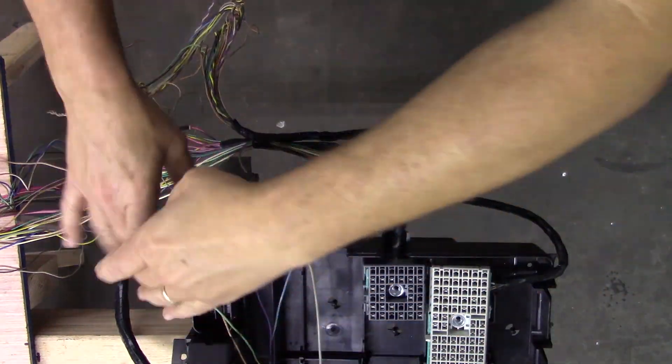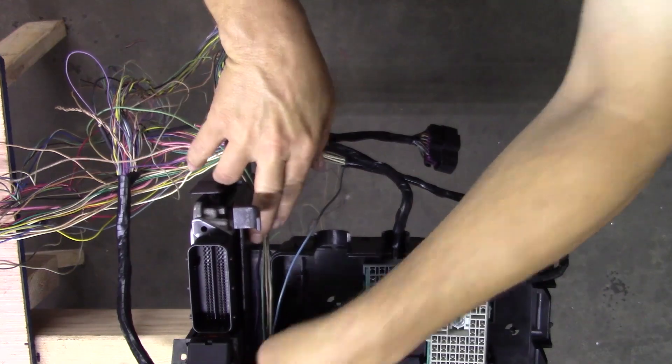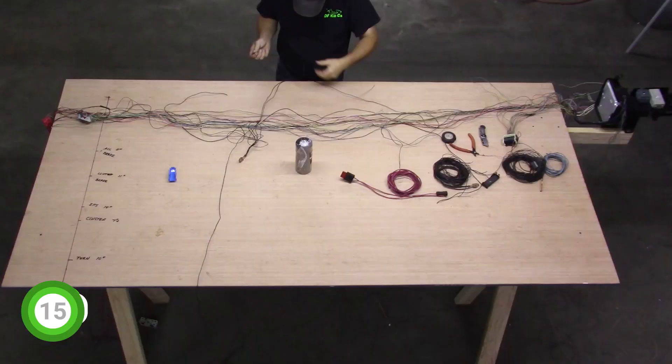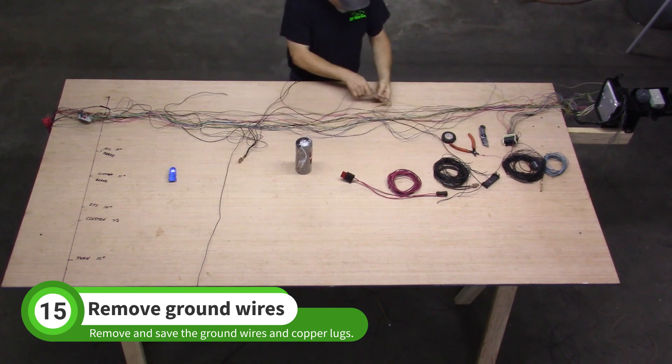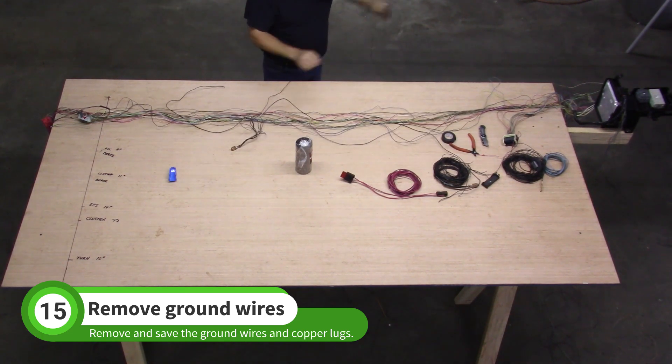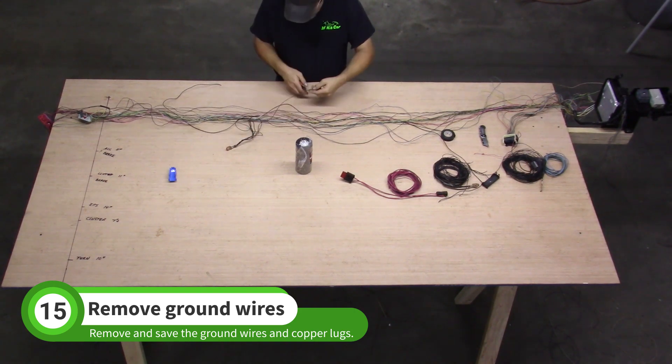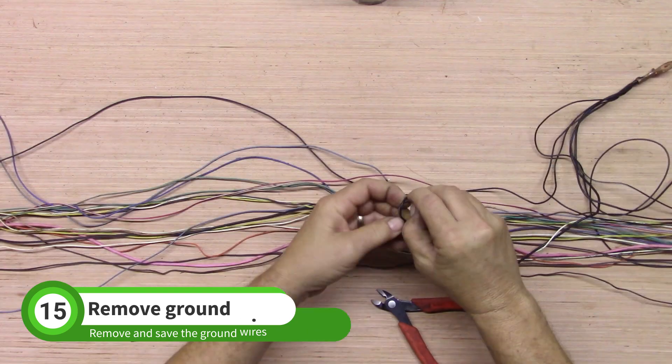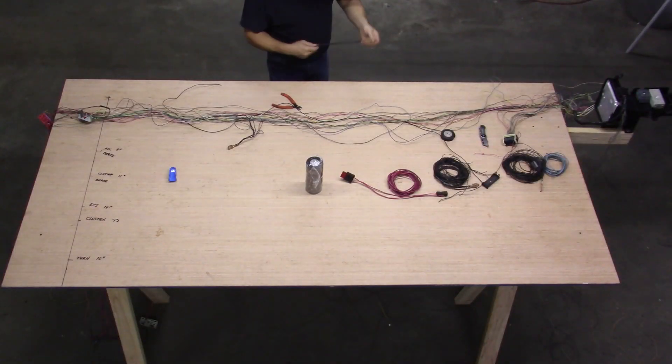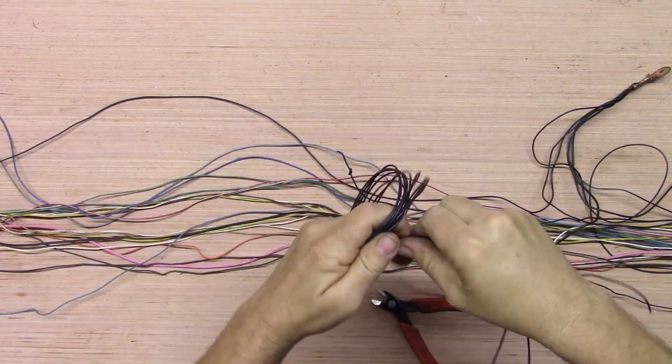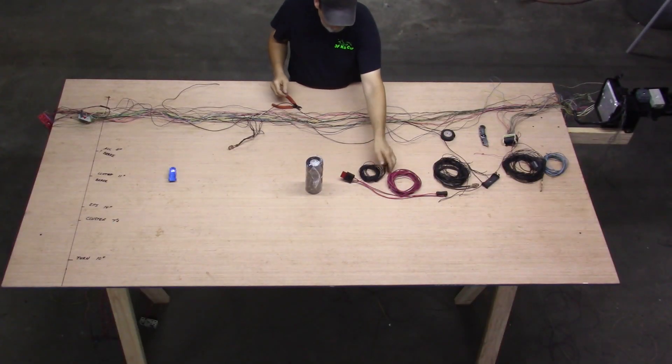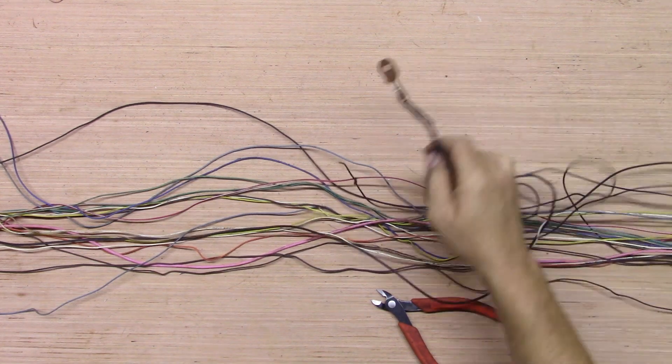Tuck the loose wires into the fuse box housing to keep them out of the way. Grab one of the copper lugs and start pulling the loose wires free from the harness. Any wires that are still attached to connectors in the harness should be cut as shown. Tie a knot to mark the wires. Roll up the ground wires and save them for later. Repeat this process for the other copper ground lug.